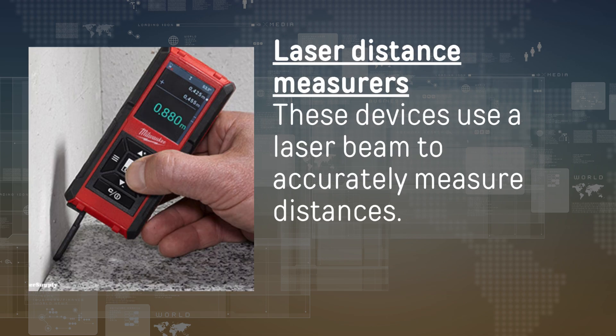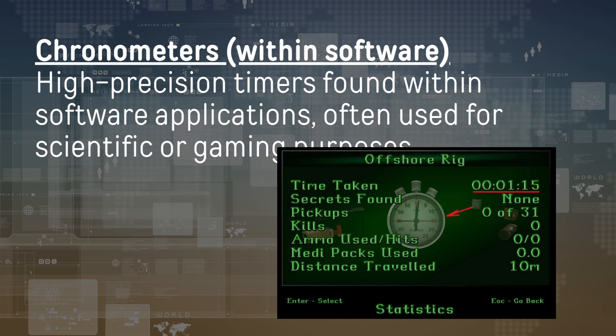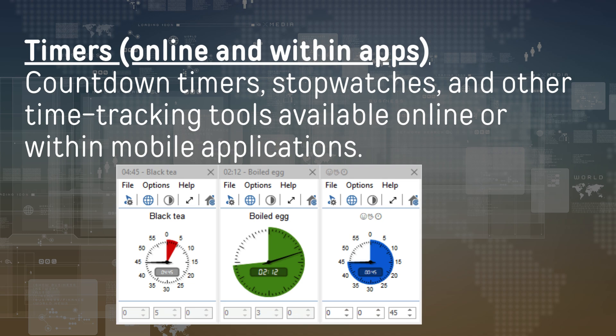Laser distance measurers use a laser beam to accurately measure distances. Augmented reality (AR) apps utilize a device's camera to overlay virtual measurements onto the real world, allowing users to measure distances by pointing their device. Chronometers within software are high-precision timers found within software applications, often used for scientific or gaming purposes.